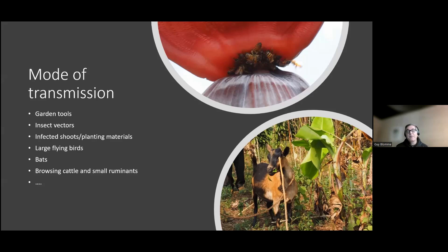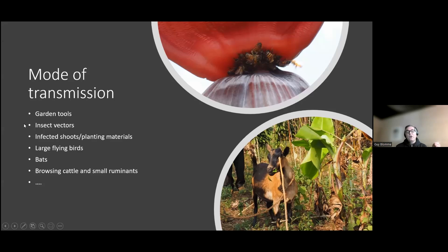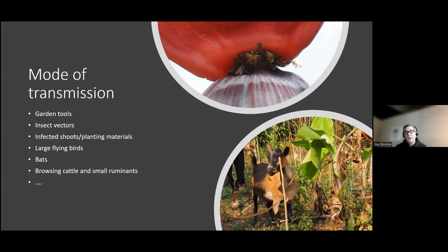For the mode of transmission, the bacteria can be transmitted with garden tools and machetes used in fields and plantations. Various insect vectors transmit the disease from a diseased to a healthy inflorescence — it can be bees, stingless bees, fruit flies, and other larger flies. Obviously also with infected planting materials, and to a lesser extent with larger flying birds or bats that feed on the fruit pulp of infected plants. Lastly, browsing cattle or small ruminants roaming around various fields across the village can also transmit the disease.